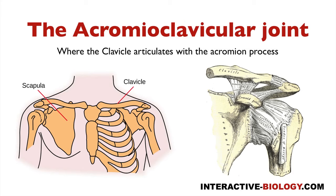So what ligaments do we have? The first one is right here — the superior acromioclavicular ligament — and that's connecting the clavicle directly to the acromion. Then on the inferior aspect we have a thinner, smaller ligament; that's the inferior acromioclavicular ligament. It's not indicated in this picture, but just know it exists on the inferior aspect.